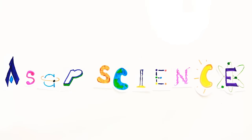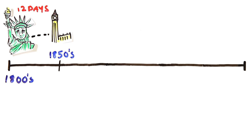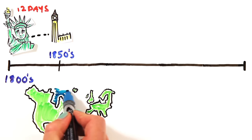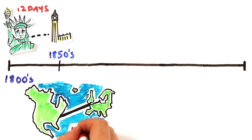200 years ago, it took 12 days to deliver a message from New York City to London. 150 years ago, the first transatlantic cable transmission was sent from the Queen of England to the U.S. President, taking 17 hours.